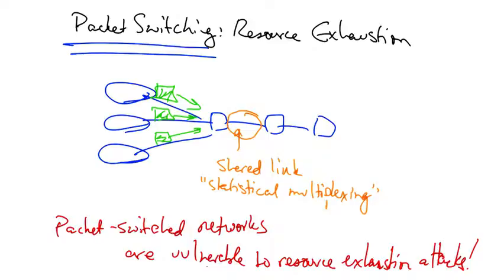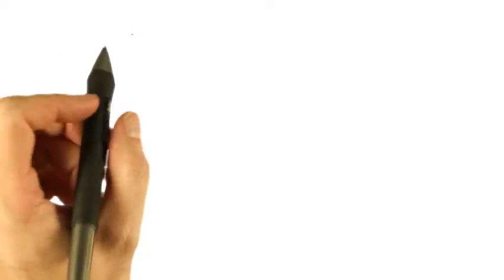So packet switched networks are extremely vulnerable to resource exhaustion attacks. Resource exhaustion attacks threaten a basic component of security known as availability. Let's take a look at other components of security as well.